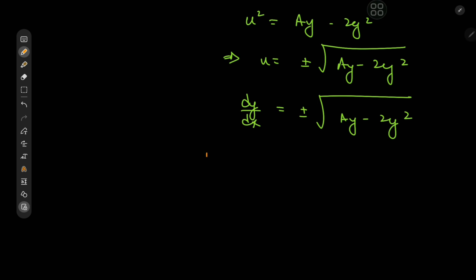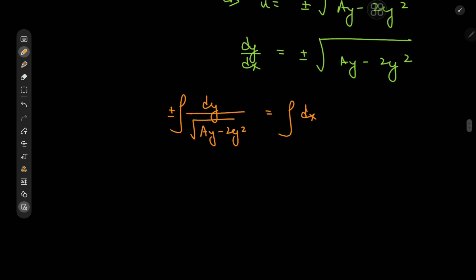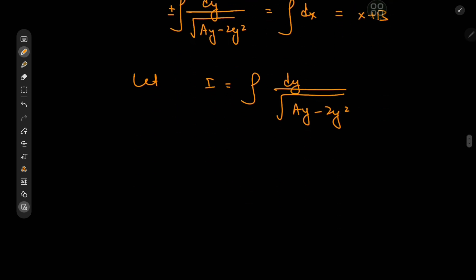On separation of variables we have dy divided by the square root of ay minus 2y², plus or minus, equal to dx. Integrating both sides gives x plus b on the right-hand side. For the left-hand side, we call the integral I — the integral of dy divided by the square root of ay minus 2y² — and we're going to adopt a completing-the-square approach for the expression in the denominator.